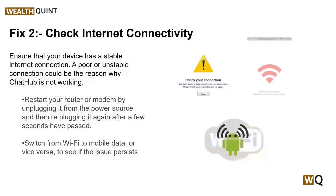Solution two: check internet connectivity. Ensure that your device has a stable internet connection, as a poor or unstable connection could be the reason why Chat Hub is not working. You can simply restart your router or modem by unplugging it from the power source and then re-plugging it after a few seconds. You can also switch from Wi-Fi to mobile data, or vice versa, to see if the issue persists.